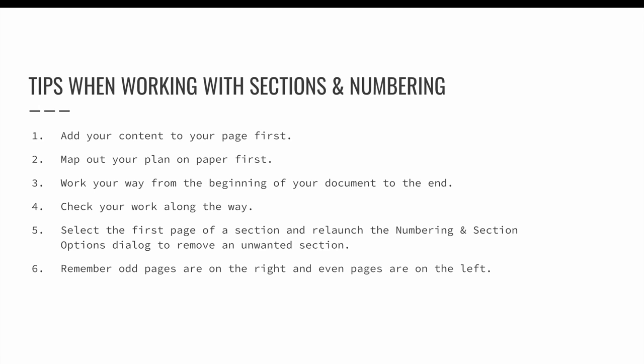Five, select the first page of a section and relaunch the Numbering and Section Options dialog if you ever need to remove an unwanted section. Simply uncheck the Start Section option to get rid of it. If you adjusted additional settings like the prefix or numbering order, you will want to reverse those settings too. One last tip: remember that odd-numbered pages always land on the right-hand side of a book and even-numbered pages land on the left-hand side. So if you tell a page that it must be either an odd or an even number, you are telling the page that it must be a right or left-hand side page — this can break your document. Make sure you aren't creating gaps where you have missing pages because you've forced a page to land on the wrong side of your page spread.